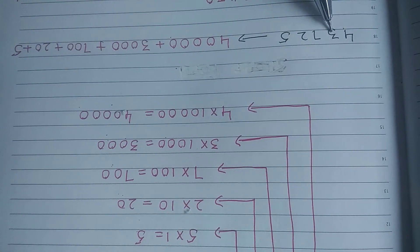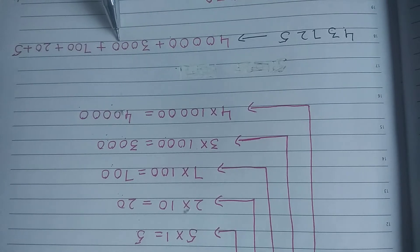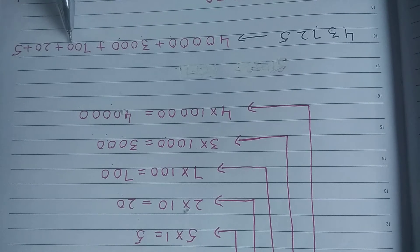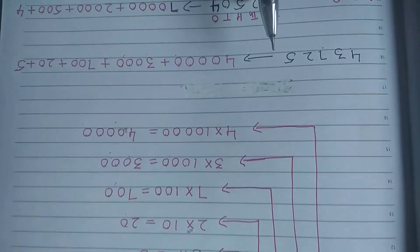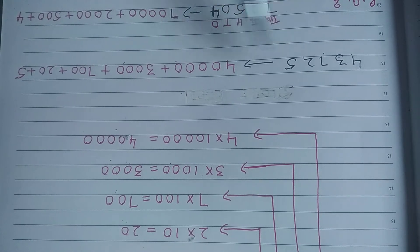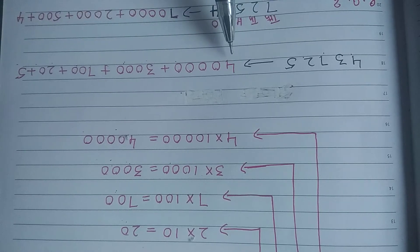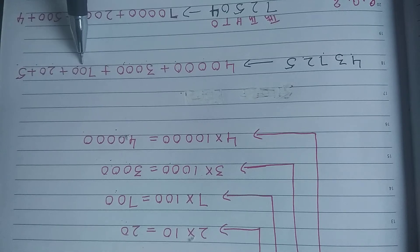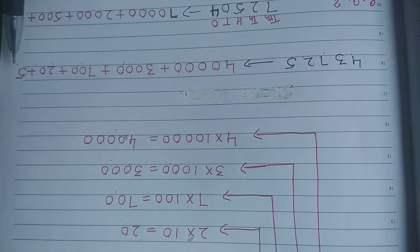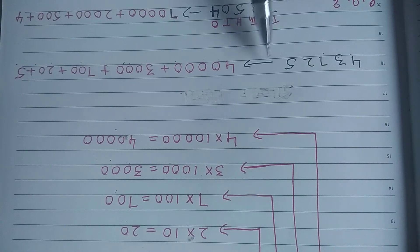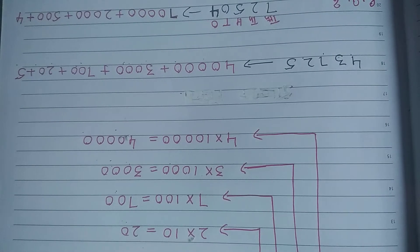Then the next digit is three, followed by three zeros — that is three thousand. Then we have seven followed by two zeros: seven hundred. Then two followed by one zero: twenty. Then we have five at the ones place. So forty thousand plus three thousand plus seven hundred plus twenty plus five is the expanded form of forty-three thousand seven hundred twenty-five.